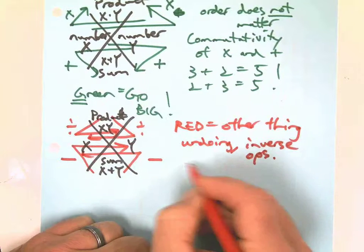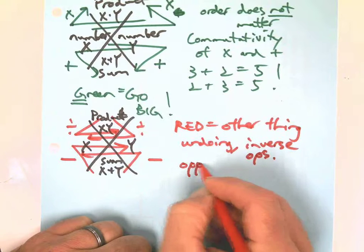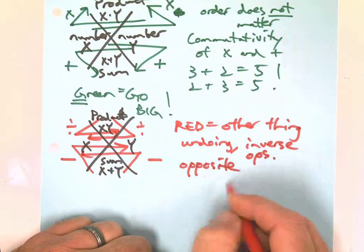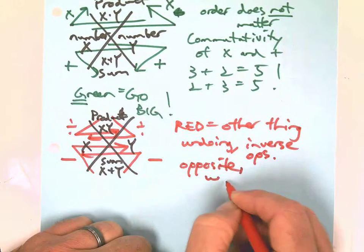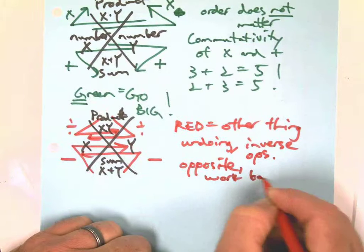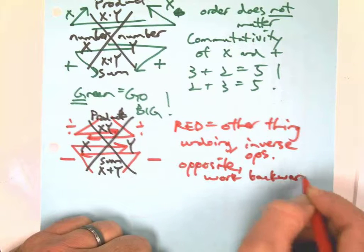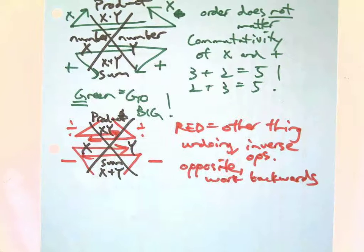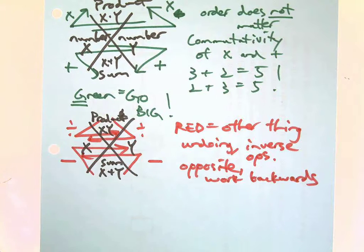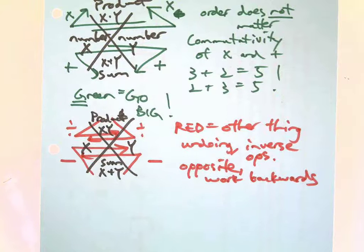I know that's technical talk. What I mean by that is you're undoing operations. Inverse operations. You're doing the opposite. Instead of multiplying, you're dividing. You're working backwards. You get the idea. Okay, so we're going to use red to indicate the working backwards or undoing of operations.